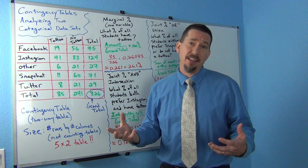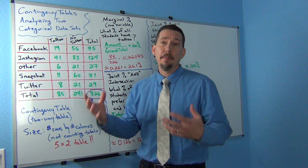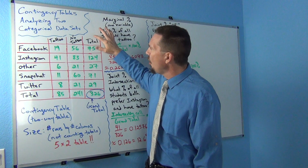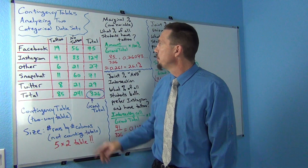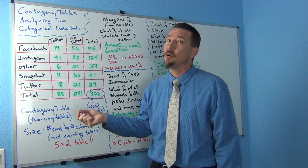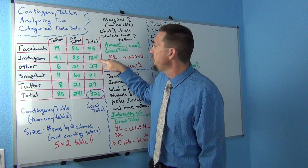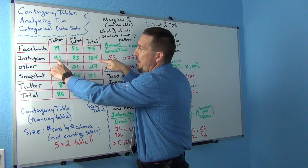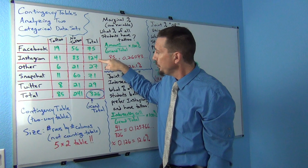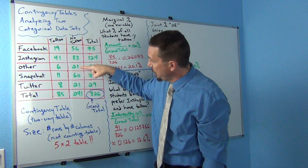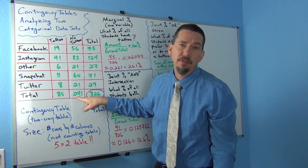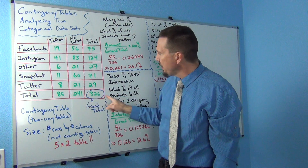We need totals because categorical data is all about proportions and percentages — it's amount divided by total. Some computer programs like Statcrunch write 'All' instead of 'Total.' The totals represent the total for that row or column. For example, 124 is the Instagram row total, adding 41 plus 83, meaning 124 students preferred Instagram. The value 241 at the end of the 'no tattoo' column means 241 students did not have a tattoo.